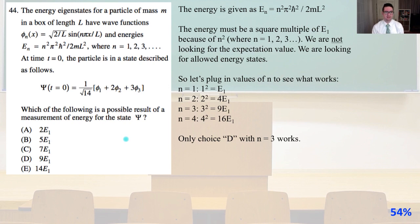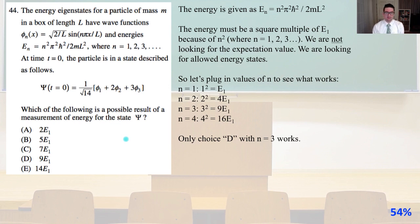Which of the following is a possible result of a measurement of energy for the state psi? The energy is given as E_n = n²π²ℏ²/(2ML²). The energy must be a square multiple of E_1 because of n². We are not looking for the expectation value — we are looking for allowed energy states. Plugging in values: n=1 gives E_1; n=2 gives 4E_1; n=3 gives 9E_1; n=4 gives 16E_1. Only choice D works, and that's for n equals 3. So that's our answer.